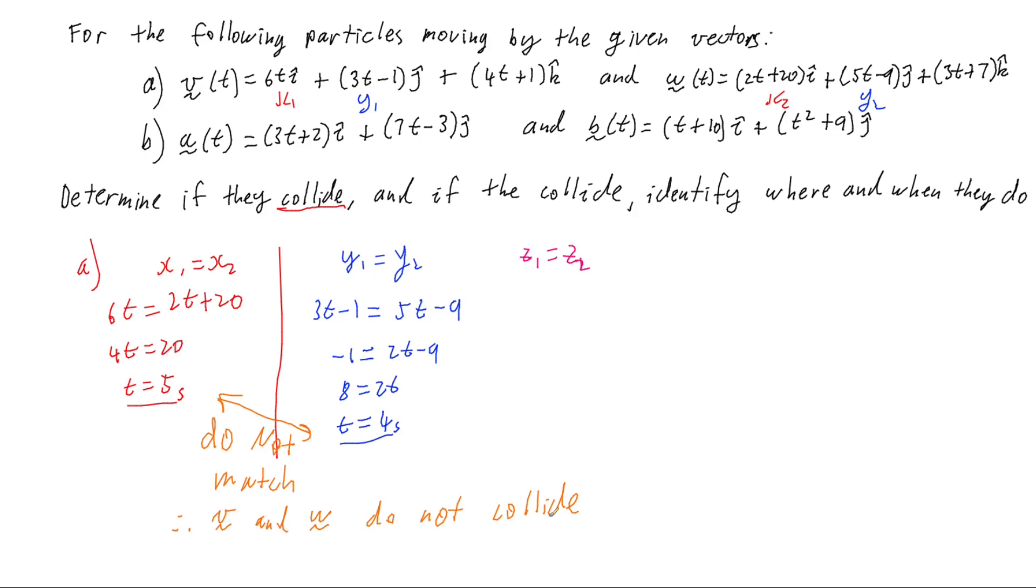The x's were the same at 5 seconds, or when t equals 5, and the y's were the same at 4 seconds, or when t equals 4. We could go further and check the z's, but if you go through the calculations, you get the fact that the z's are the same at t equals 6, and that's different again.